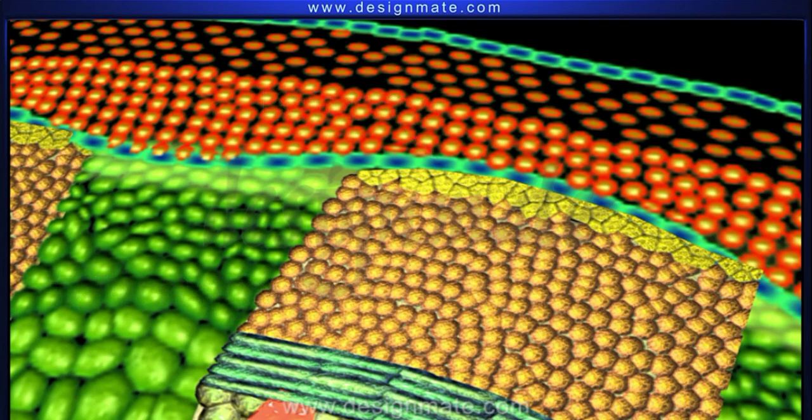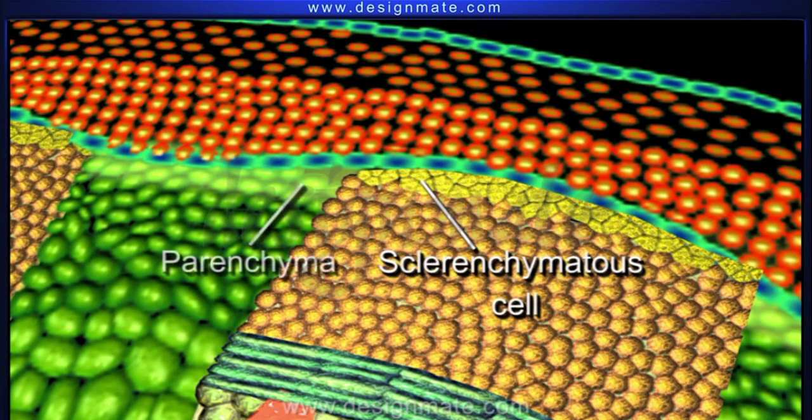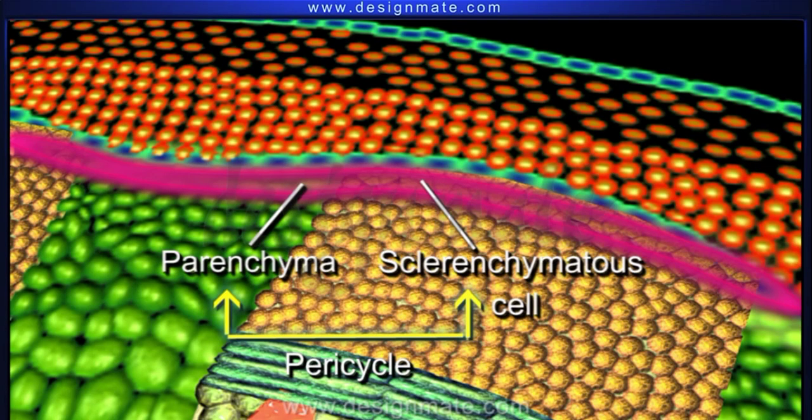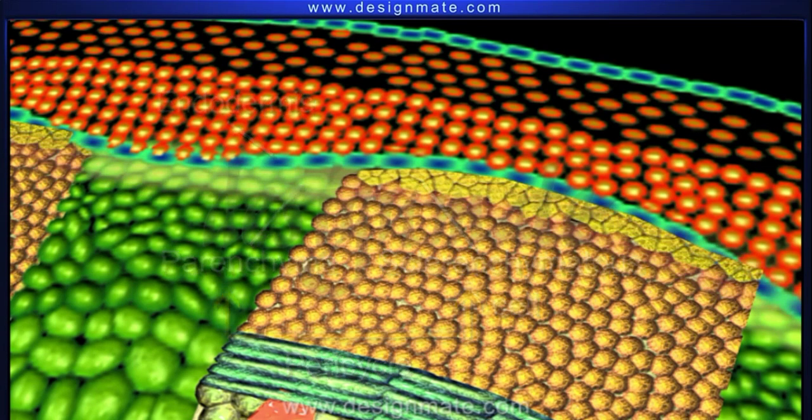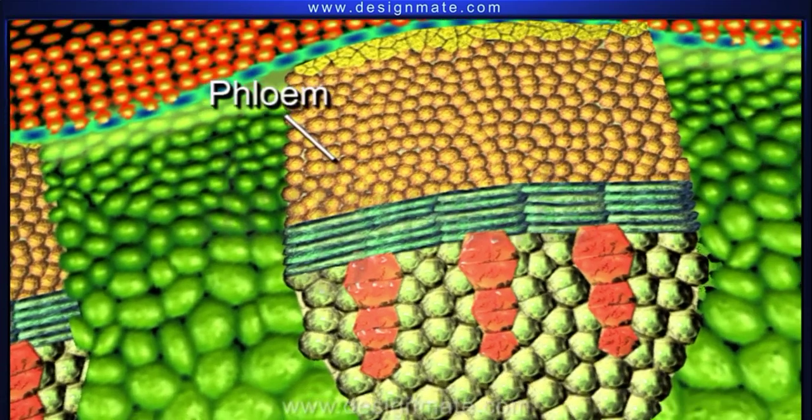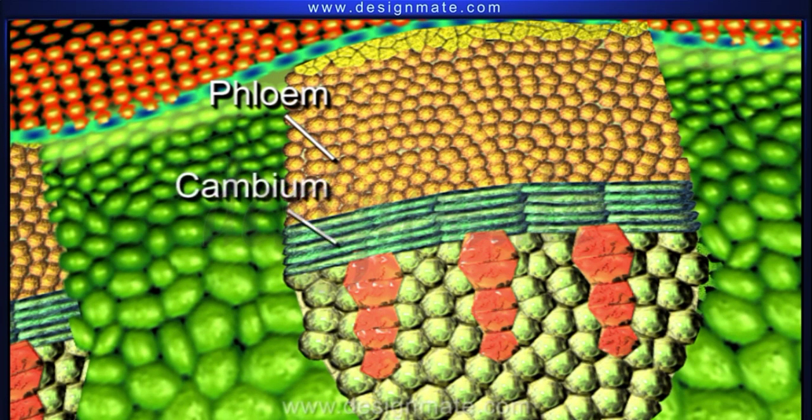Some sclerenchymatous patches and intervening parenchyma together constitute pericycle, which lies next to the endodermis. Phloem lies inner to the pericycle. Cambium separates the xylem and the phloem.